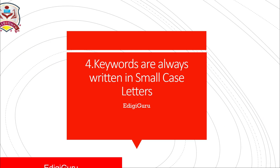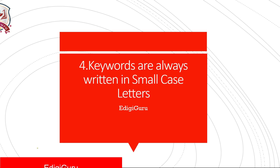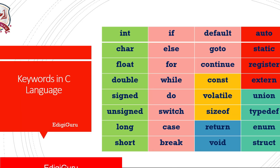The second rule says that keywords are always written in small case letters. We cannot use uppercase letters to write a keyword. All 32 keywords in C language are written in small case letters. Whenever we use any of those 32 keywords in our C program, we must write it in small case letters.